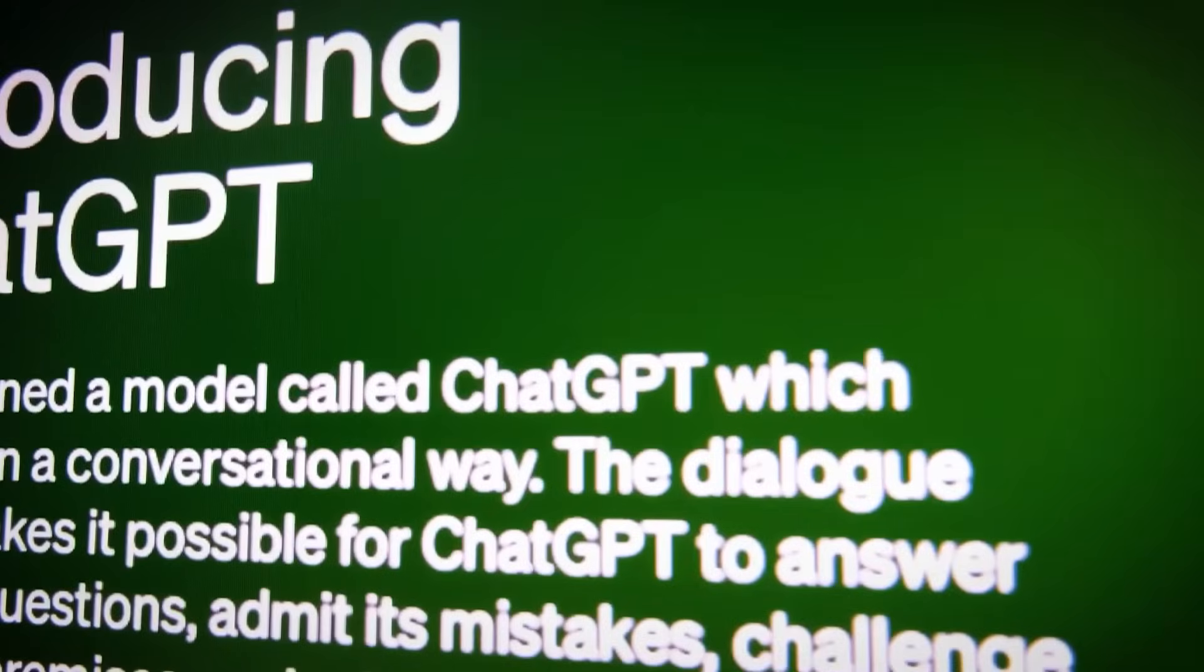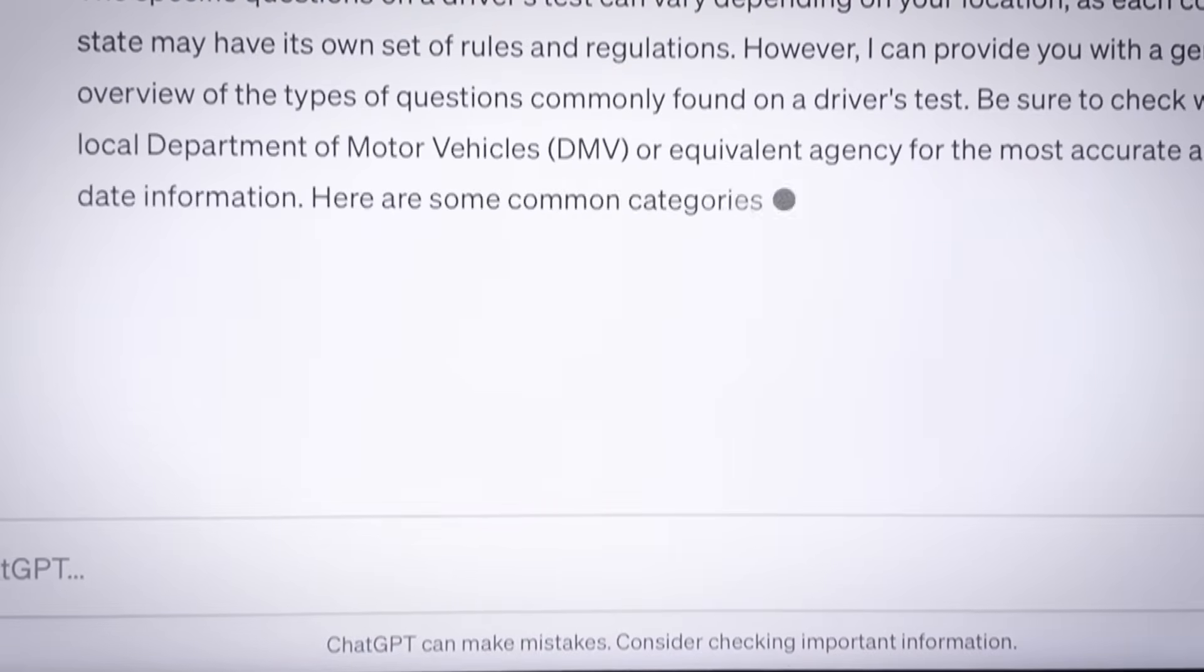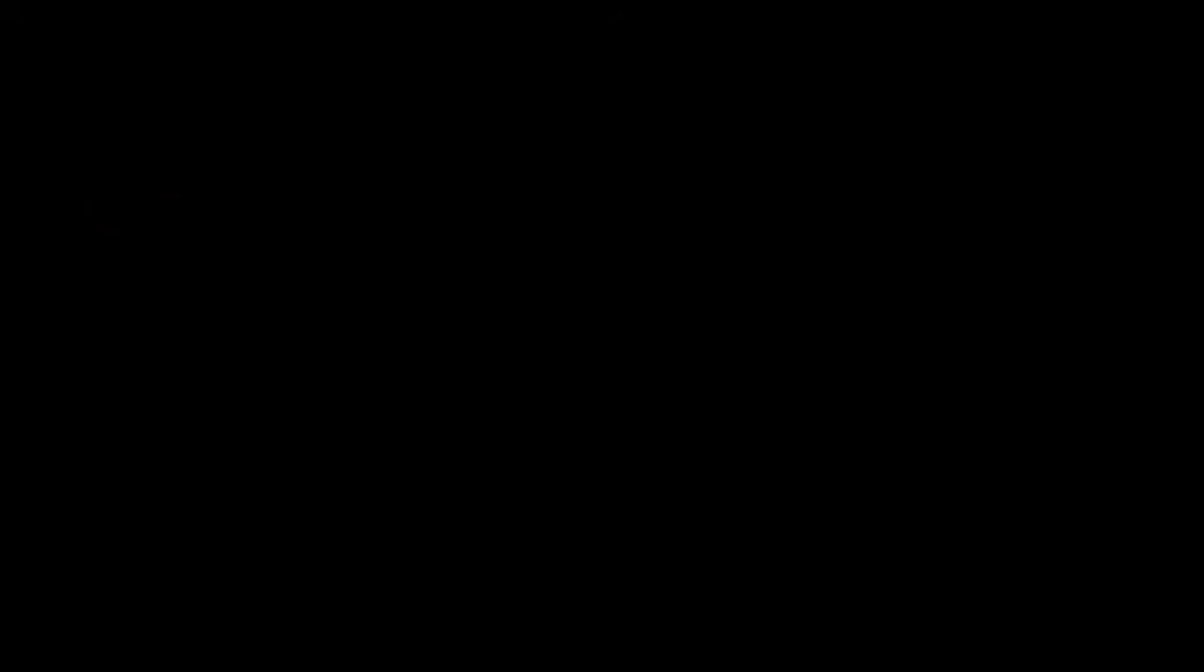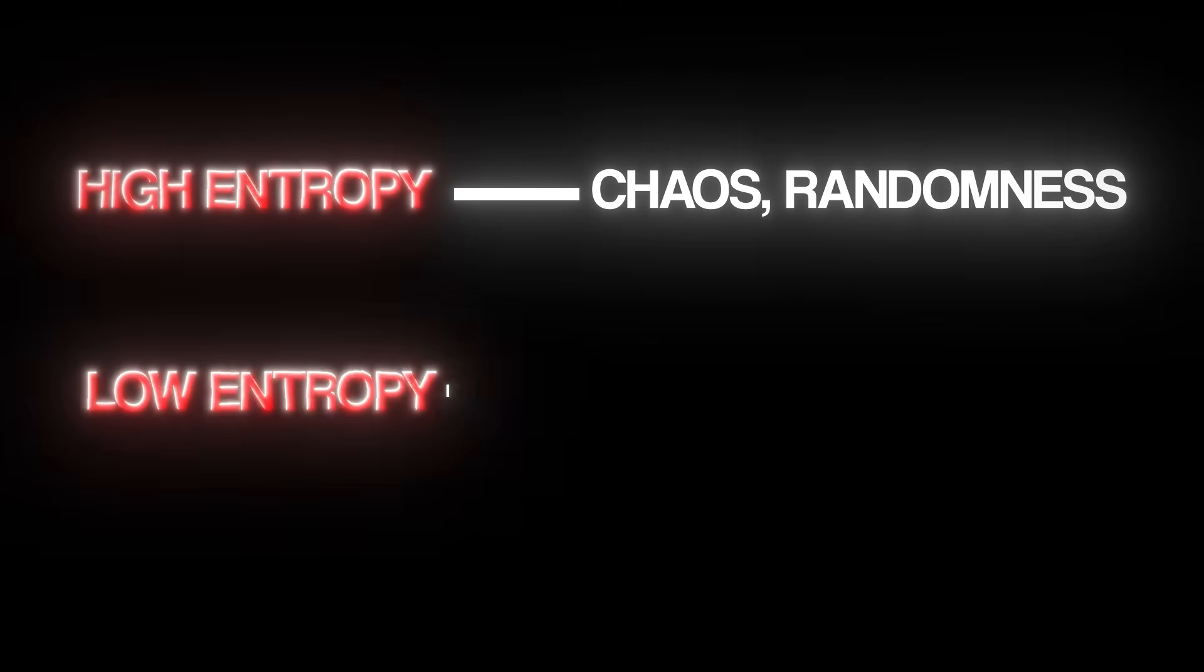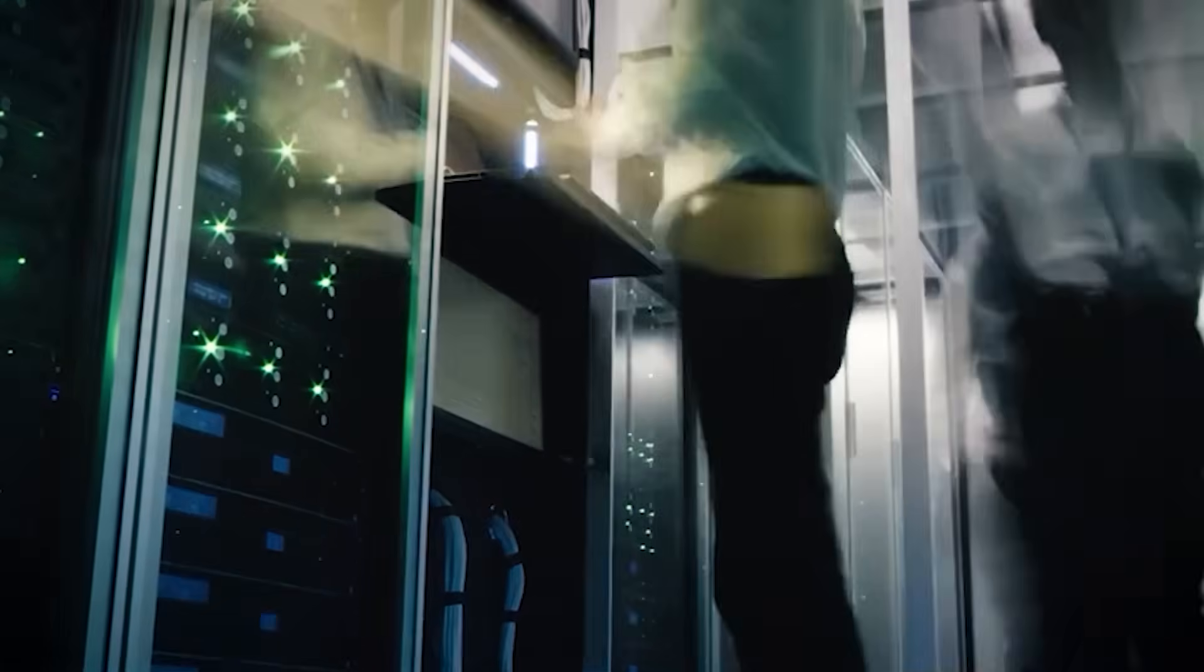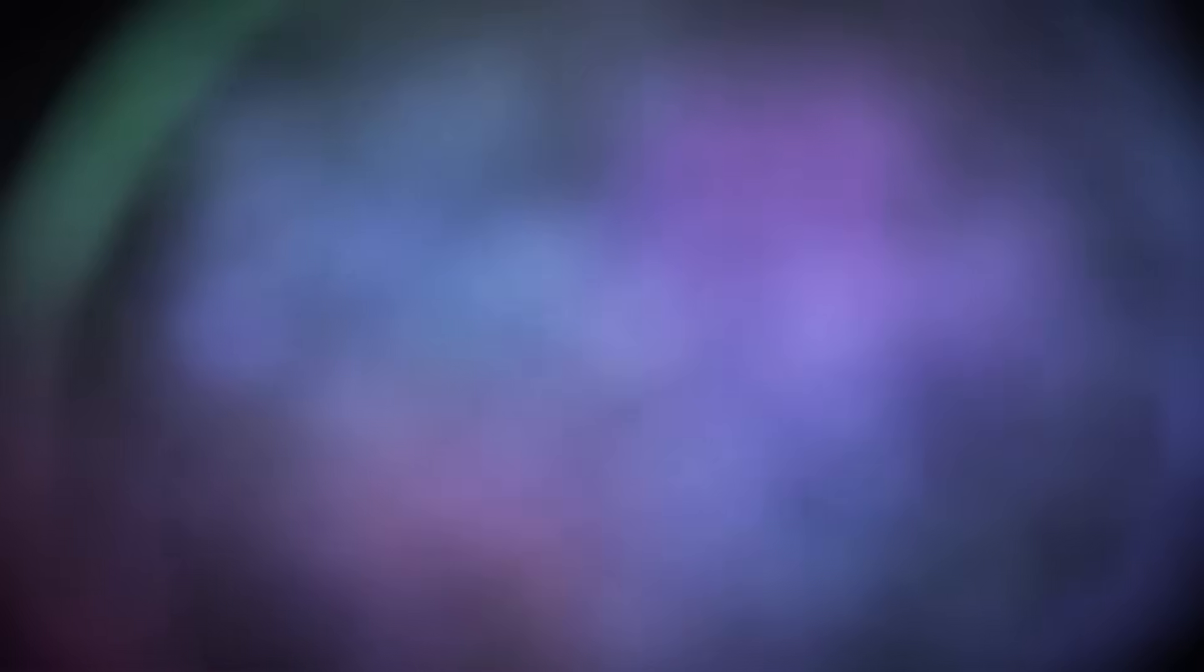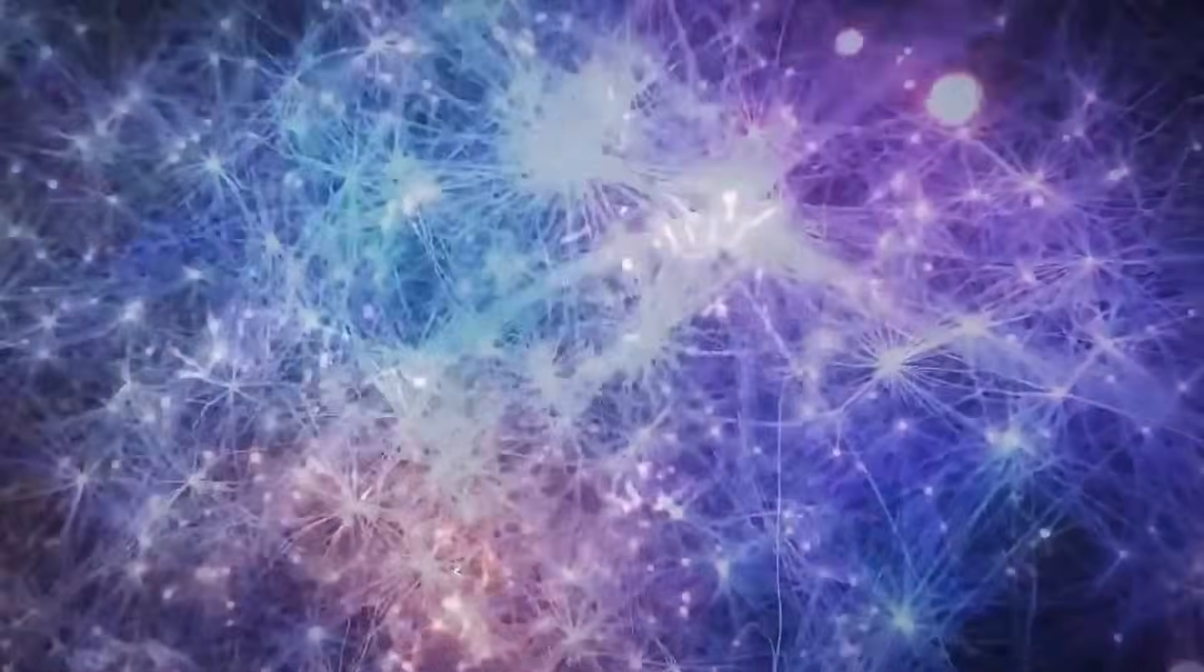To understand why the Entropy Matrix is such a game-changer, we need to talk about Entropy itself. In simple terms, Entropy measures uncertainty. High Entropy means chaos and randomness, while low Entropy means order and structure. The problem with current AI models is that they're stuck at extremes. When Entropy is too high, AI generates unpredictable, sometimes nonsensical responses. When it's too low, AI becomes rigid, unable to adapt or think creatively.